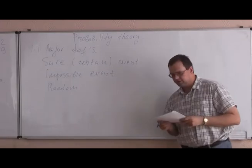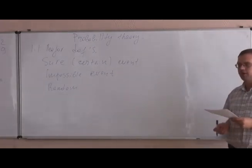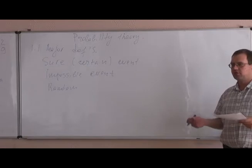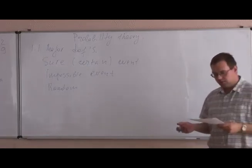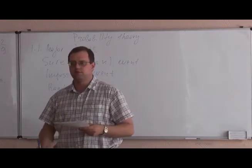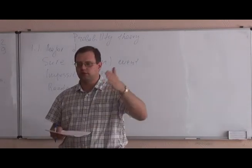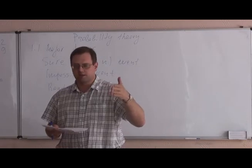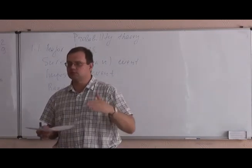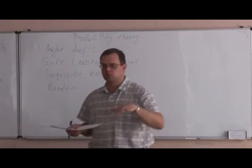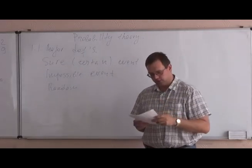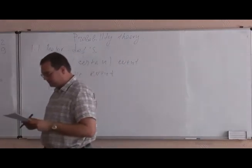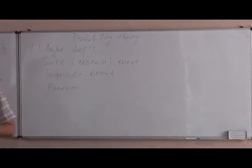The last one is the regular event. The certain event is the event that will definitely happen under the set of conditions — for example, the sun will rise tomorrow. The impossible event is something that will definitely not happen — if you toss a coin, the coin will not hang in the air, again, under the set of conditions. A random event is basically the subject of the entire topic — something that may happen or may not happen.